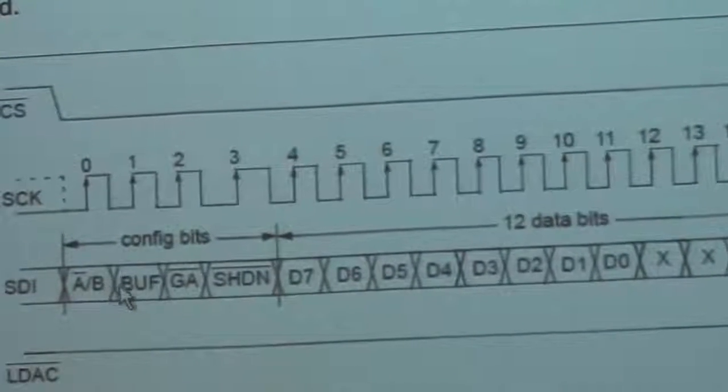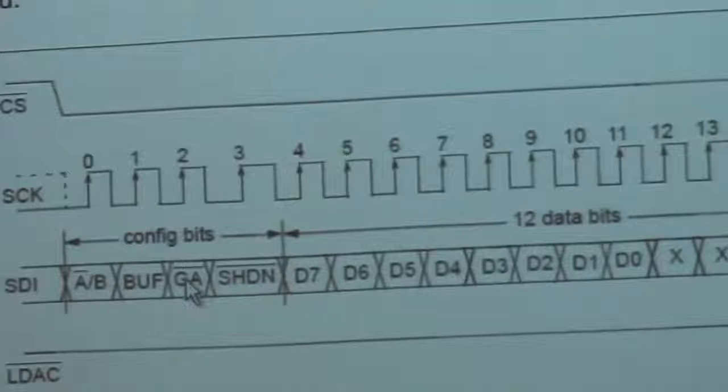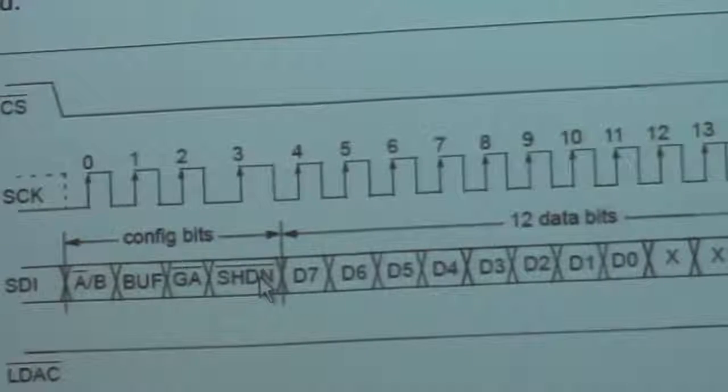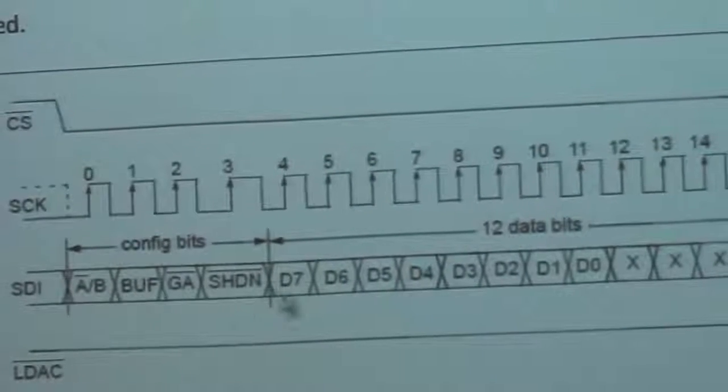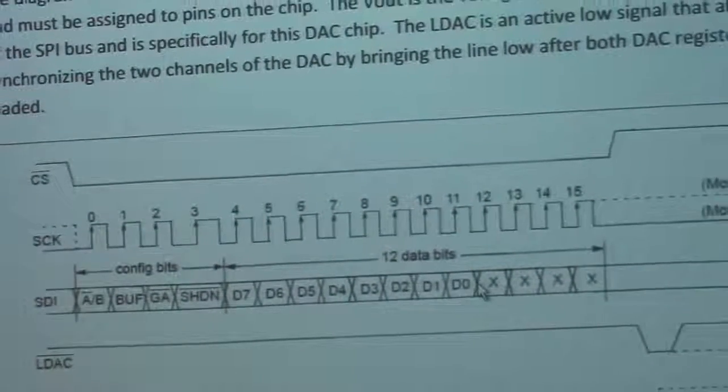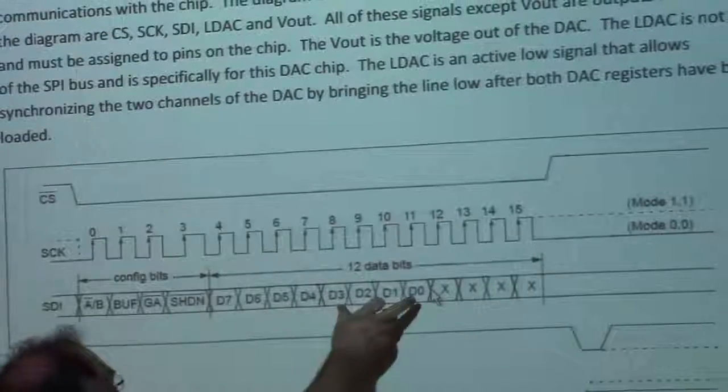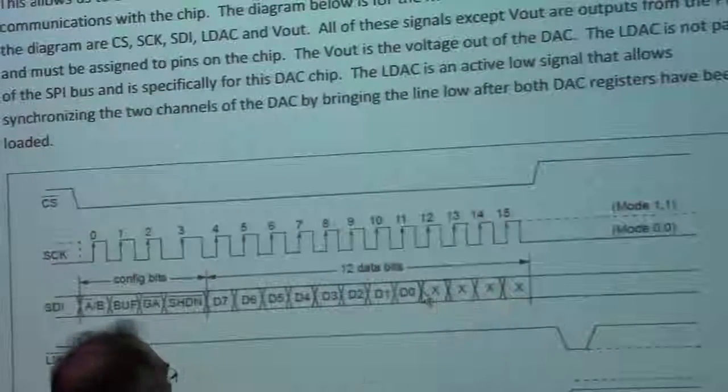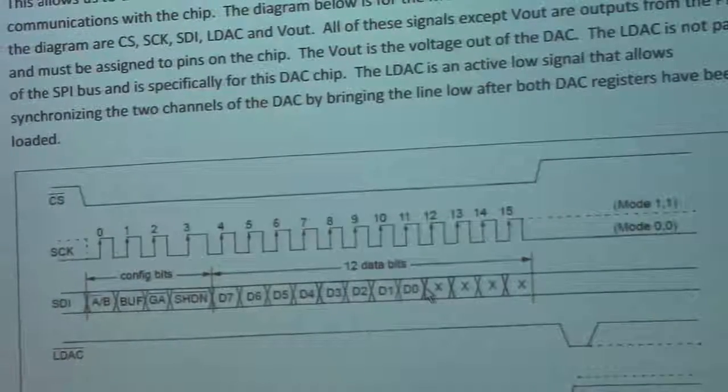It has this AB buff, GA for the gain, after our gain and the shutdown, and then 12 data bits, eight of which are important to us. So there's four here, and then four in the second eight bits, and then the last four bits are don't care.